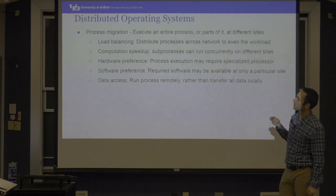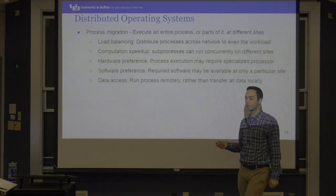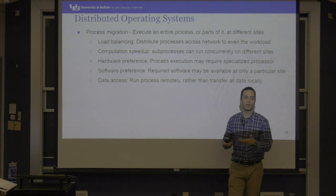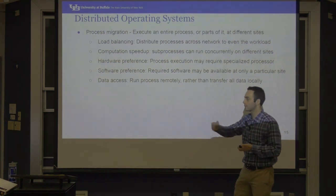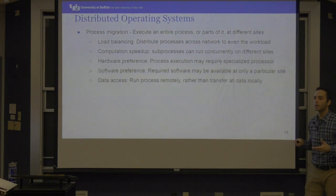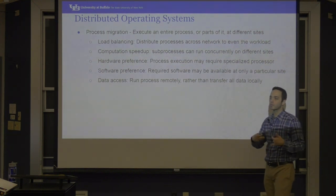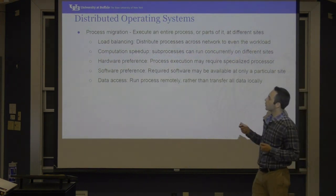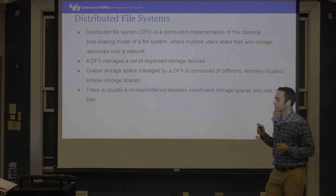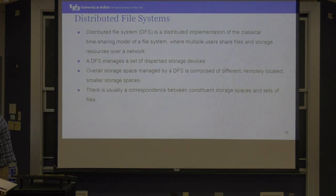Process migration can be motivated by hardware preference — for example, if your device lacks floating-point operations but your process needs them, transfer it somewhere that has them. Or software preference: if code or libraries you need don't exist locally but exist elsewhere, transfer the process there. Distributed file systems, like Google Drive, implement the classic time-sharing file system model across many storage devices, giving you the same API regardless of where the data is stored.